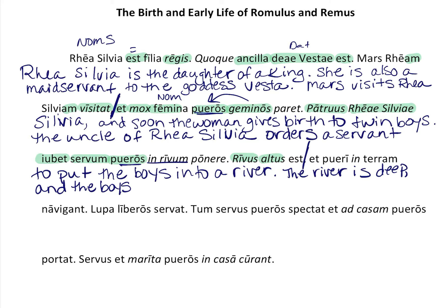It's one of your first verbs — it's plural — so the boys sail. And 'in terram' means 'onto land.' So the boys sail to land.